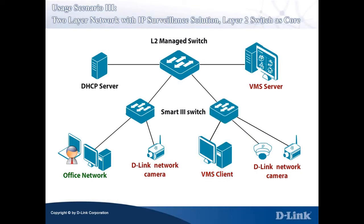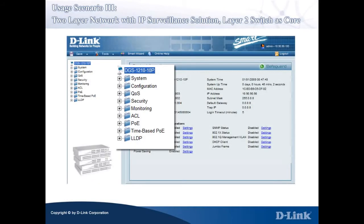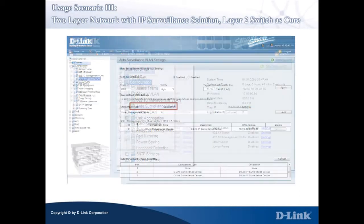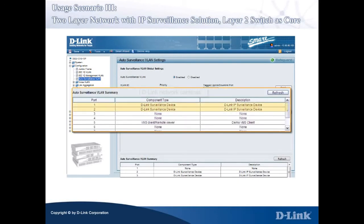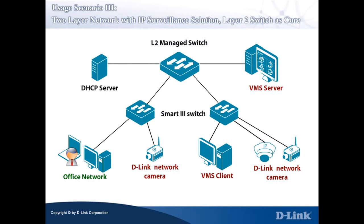We can verify the IP surveillance configuration in the Smart 3 Switches by the following steps. Log in to the Smart 3 Switch and skip the Smart Wizard by clicking the Exit button. In the Smart 3 Switch Web Management Console, click Configuration and select Auto Surveillance VLAN in the leftmost panel. In the rightmost panel, we can see that D-Link network cameras are recognized as D-Link surveillance devices on port 1 and port 2, and the VMS Client on port 5, as shown in the Auto Surveillance VLAN summary table. This concludes the introduction of the third Auto Surveillance VLAN usage scenario and how to implement and configure its network.